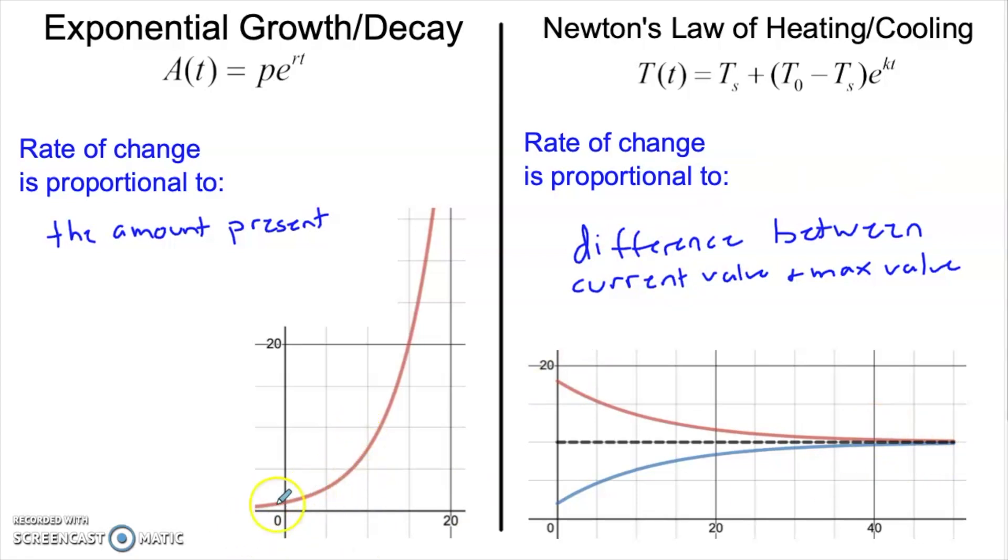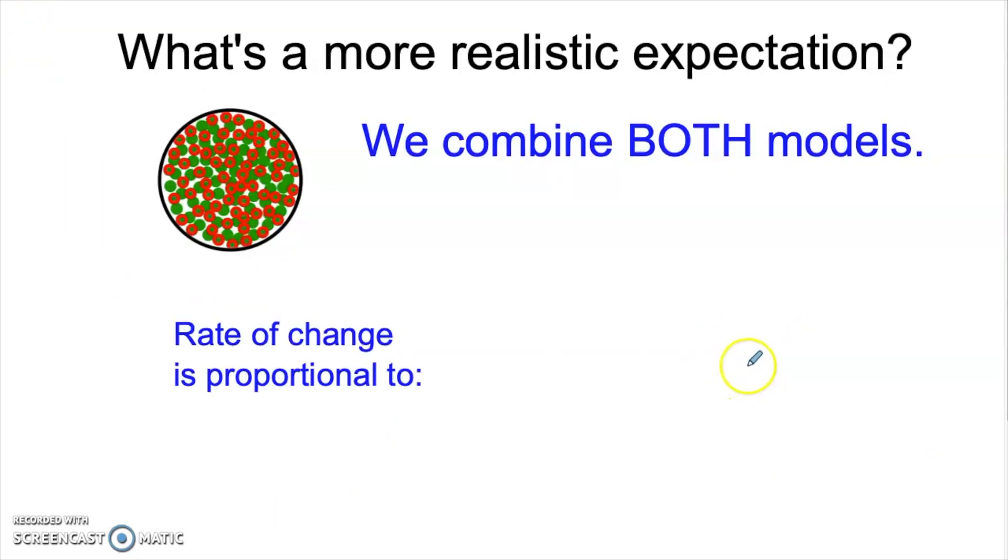We kind of like this behavior for the beginning of the bacteria. In the beginning, a small amount of bacteria means slow growth rate, and over time it increases. And we like this behavior for the end behavior. As we approach the limit of the population, we need that growth rate to slow down. So what we need is something that's sort of exponential for a little while and then transitions to this type of a model eventually. And the way we get that is by actually combining these two ideas.